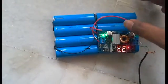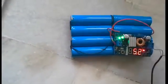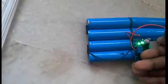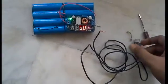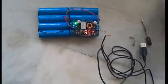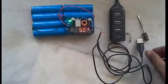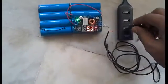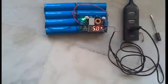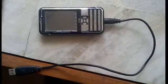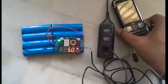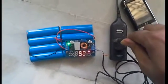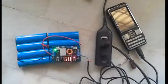I have connected the output of this buck converter to a USB male cable. Here we have the USB port. I am going to insert this male cable into this USB port. Now I am going to connect this mobile phone to this USB port.